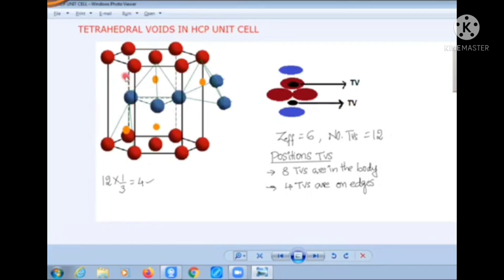So six at these positions, two at these positions, together makes eight tetrahedral voids within the body, and four tetrahedral voids on the edges. Together, twelve tetrahedral voids are observed in an HCP unit cell.